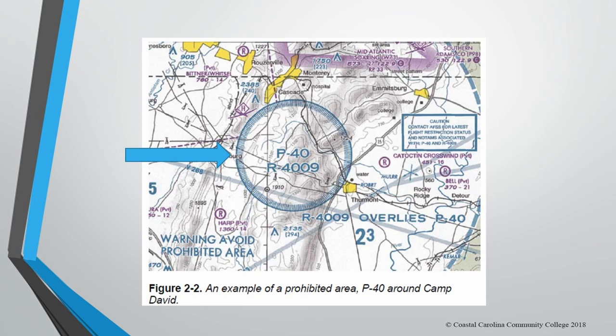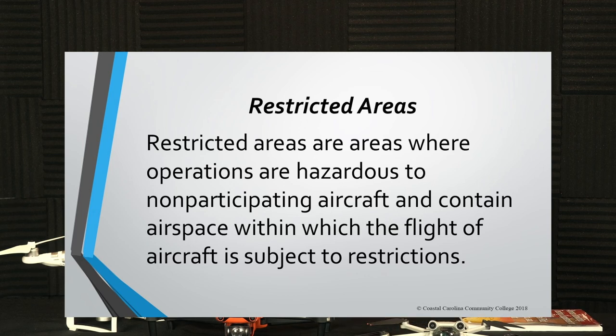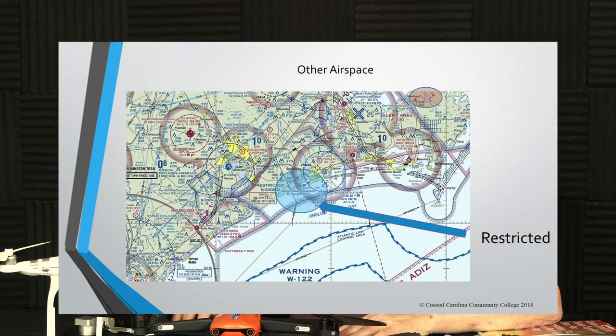One example from the book is Figure 2-2 where it says P-40 — that's actually Camp David. For restricted areas, these contain airspace within which the flight of a drone may be restricted. In the Jacksonville area you can find restricted areas on the sectional map. You cannot fly there unless you know that the operations are cold — there are hot and cold designations. Sometimes around the perimeter of the sectional charts is contact information to see if an area is hot or not, and they may even publish the hours that they're hot.